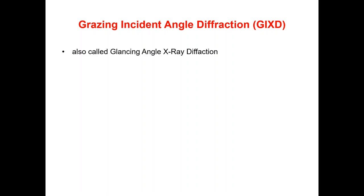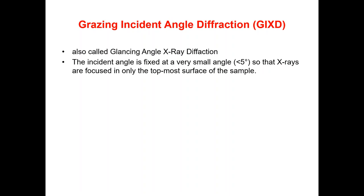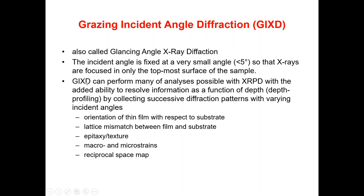The second technique is grazing incidence angle X-ray diffraction, also called glancing angle X-ray diffraction. In this technique, the incident angle is fixed at a very small angle — smaller than five degrees — so that the X-rays are focused only on the top surface of the sample. This technique can perform many of the analyses possible with XRPD, with the added ability to resolve information as a function of depth through depth profiling by collecting successive diffraction patterns with varying incidence angles.